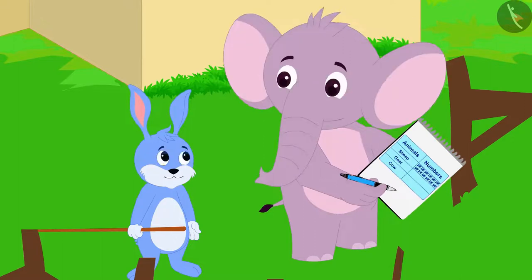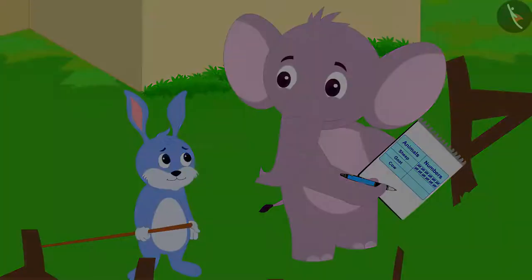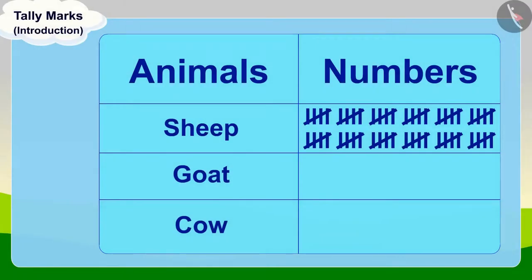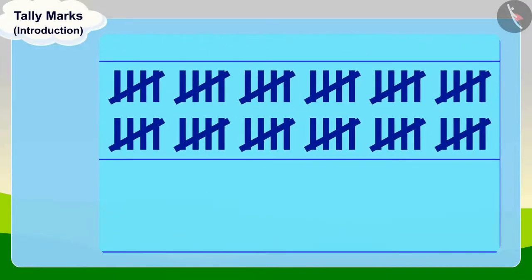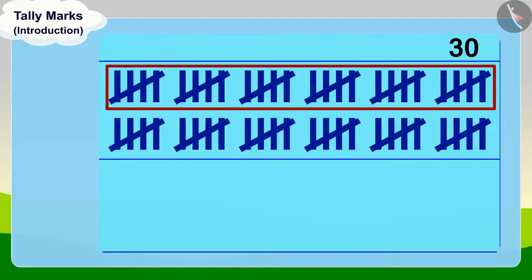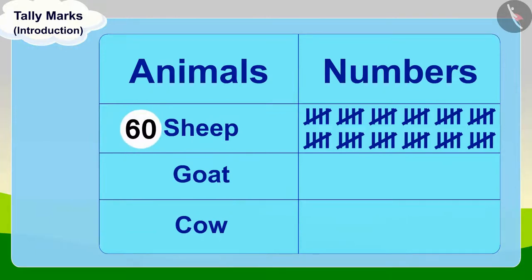Bunny laughed and said, you just count these groups of five. Appu got very excited and immediately began counting those groups: five, ten, fifteen, twenty, twenty-five, thirty, thirty-five, forty, forty-five, fifty, fifty-five, and sixty. There are a total of sixty sheep.